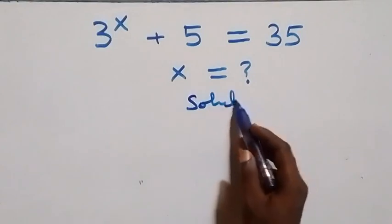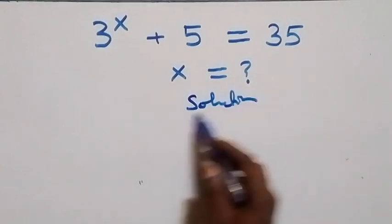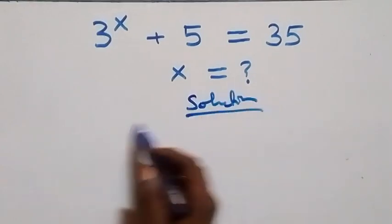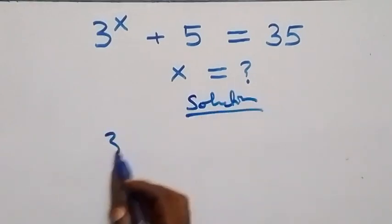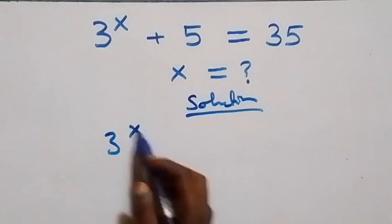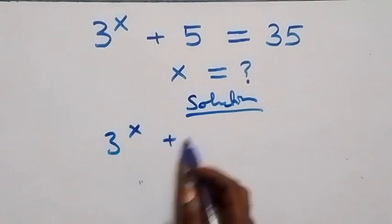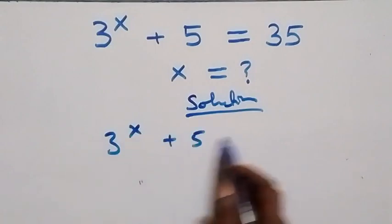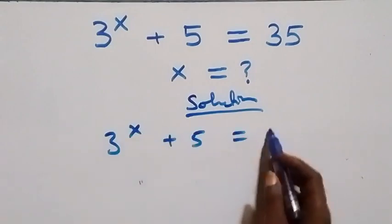The solution starts from what is given here, which is 3 raised to power x plus 5 equals 35.